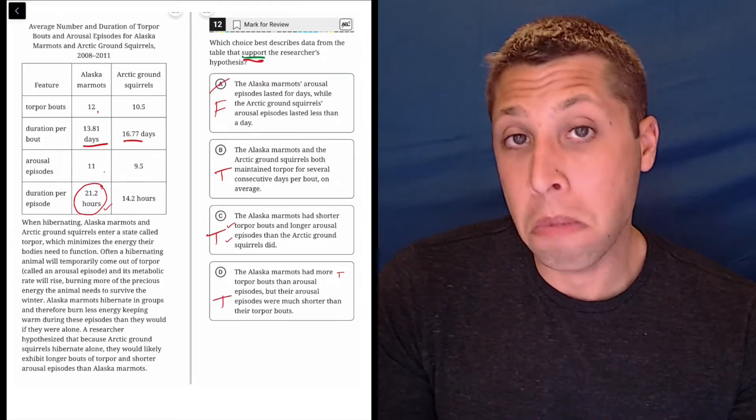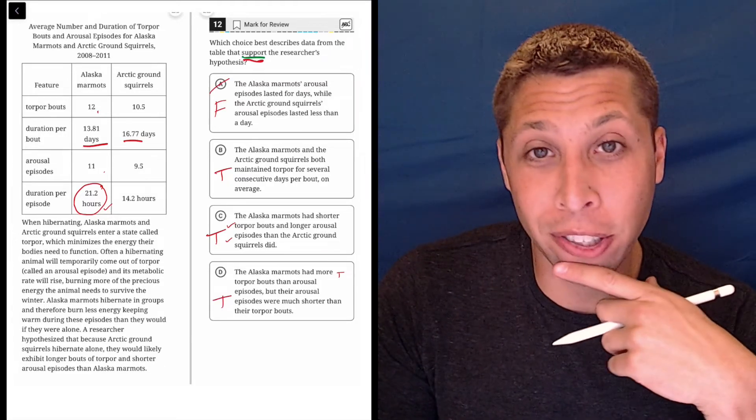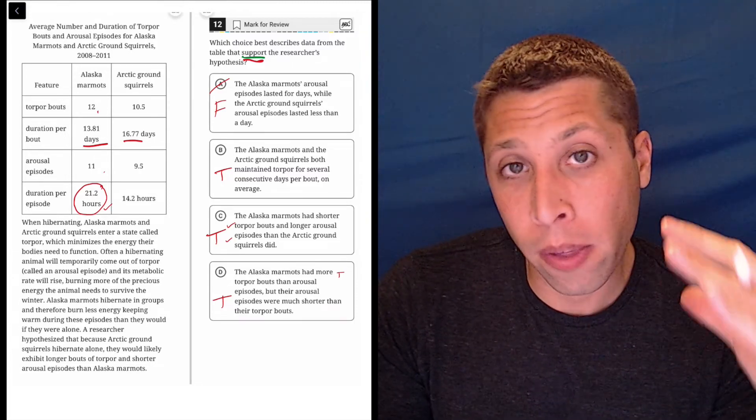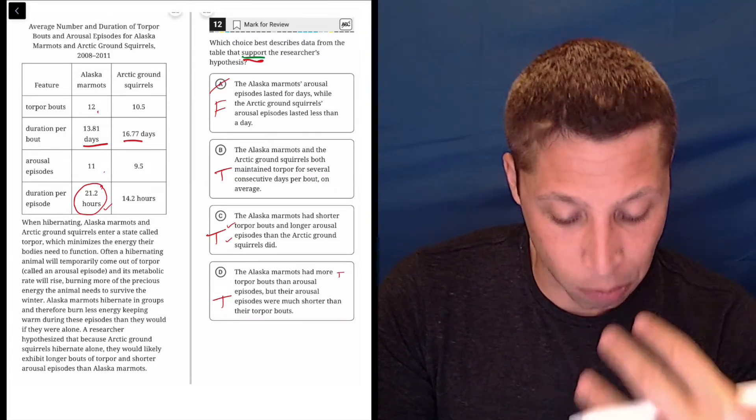So three answer choices are true. I don't know. Was that a successful strategy there? Well, I got rid of one. Now we have to see they're true, but are they relevant to the hypothesis? Are they going to support their hypothesis?